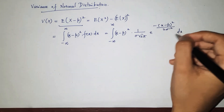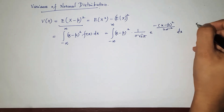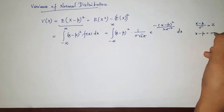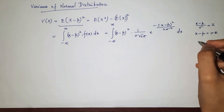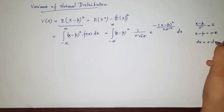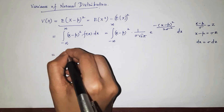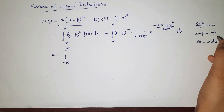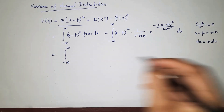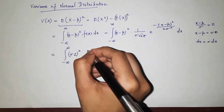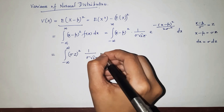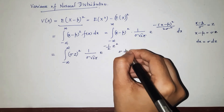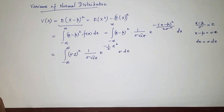Now I am going to give a substitution where z equals (x minus mu) divided by sigma. So I can write x minus mu as sigma z, and on taking the derivative on both sides I get dx equal to sigma dz. Therefore the integral becomes: (sigma z) squared, which is sigma squared z squared, times (1 over sigma root 2 pi) times e raised to minus one half z squared, times sigma dz.